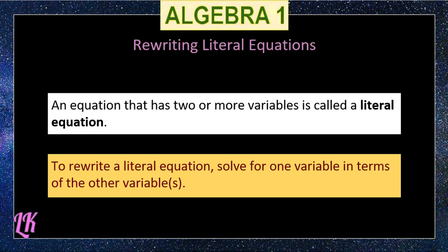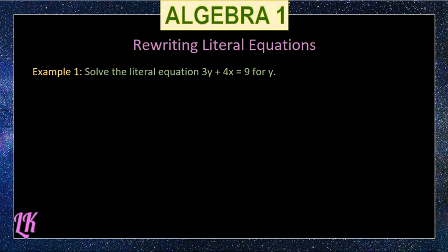The focus of today's lesson is rewriting literal equations. A literal equation is an equation that has two or more variables. In order to rewrite a literal equation, we need to solve for one variable in terms of the other variables. That means we have to isolate the variable we are solving for on one side of the equation. Let us consider the following examples.